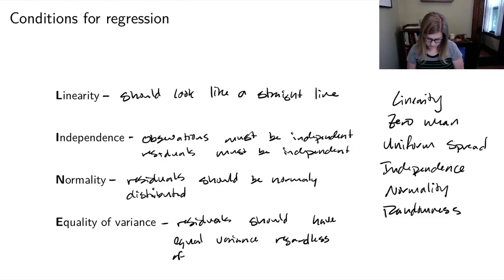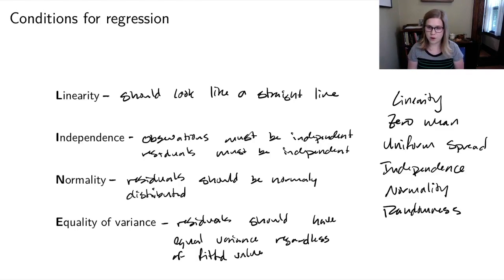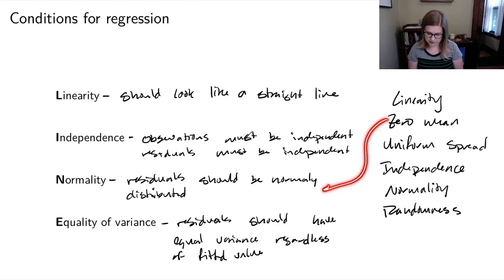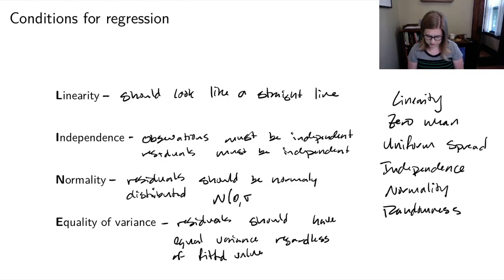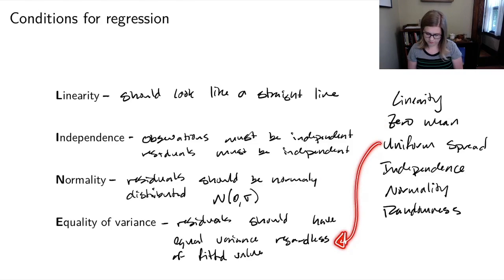Let's see how the textbook conditions connect to LINE. Linearity obviously maps to linearity. Zero mean means residuals need to be centered at zero — that's baked into the normality condition, since residuals must be normal with mean zero. Uniform spread maps to equality of variance. Independence maps to independence, and normality maps to normality.